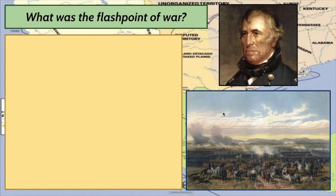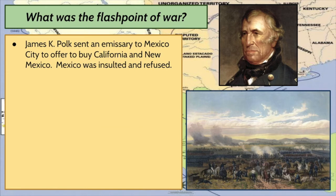The next left side question is: what was the flashpoint of war? The border dispute over Texas is what's causing issues between the U.S. and Mexico. James K. Polk sent an emissary, Nicholas Slidell, to Mexico City to offer to buy California and New Mexico. The initial offering price was $25 million. But Mexico was quite insulted and said no — they didn't feel like selling half of their country for $25 million. They refused to accept the money and refused to give up their territory.